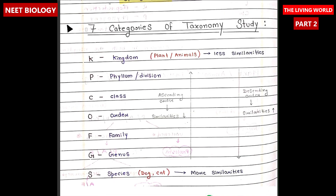Now let's discuss our next topic: the seven categories of taxonomy studies. The seven main categories are kingdom, phylum or division, class, order, family, genus, and species. These categories are used to classify and organize living organisms based on shared characteristics, with each level representing a progressively more specific grouping. These are arranged in ascending or descending order. In ascending order, similarities decrease, and in descending order, similarities increase.